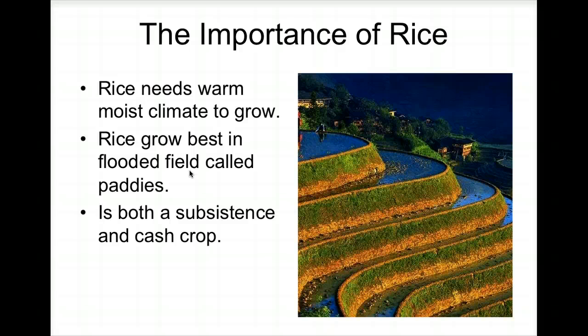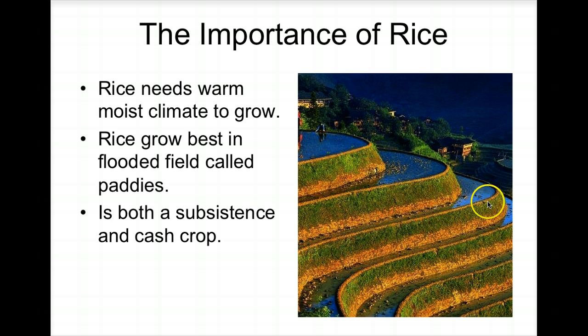The main food crops are rice, sugar cane, soybeans, and fruit. Rice is especially important — I used the image twice because it's so significant. It needs a warm, moist climate and grows in flooded rice fields called paddies. Because much of the land is mountainous and hilly, farmers build up terraced land to enclose water so they can plant rice. Rice is both a subsistence and a cash crop, as people grow enough to eat and sell.